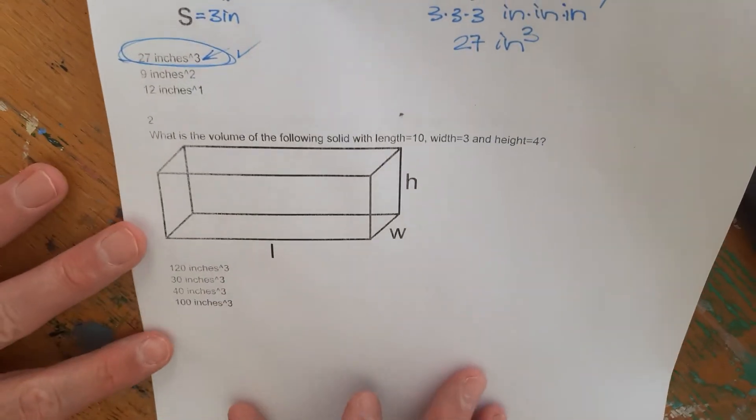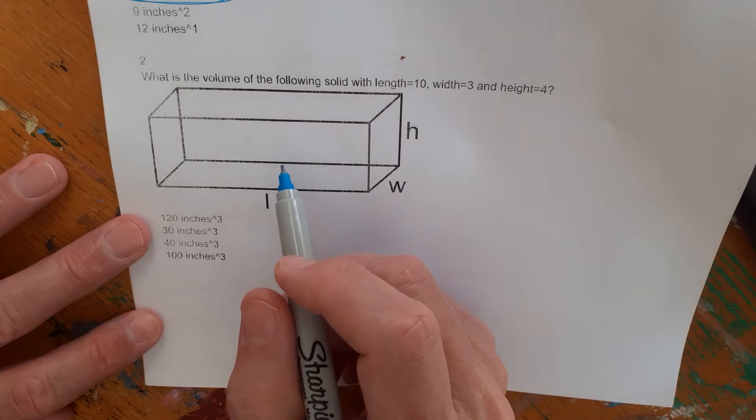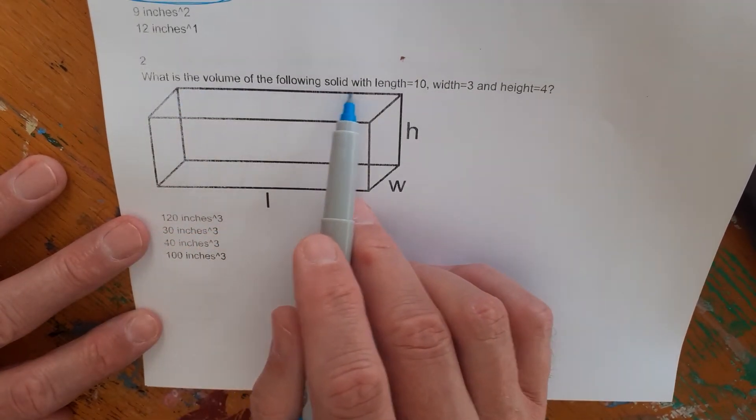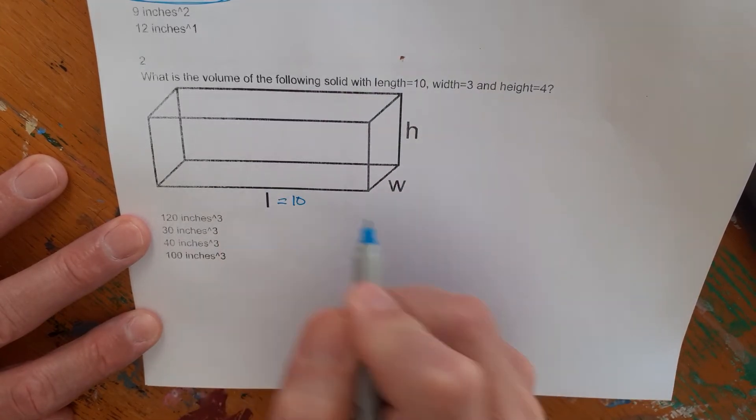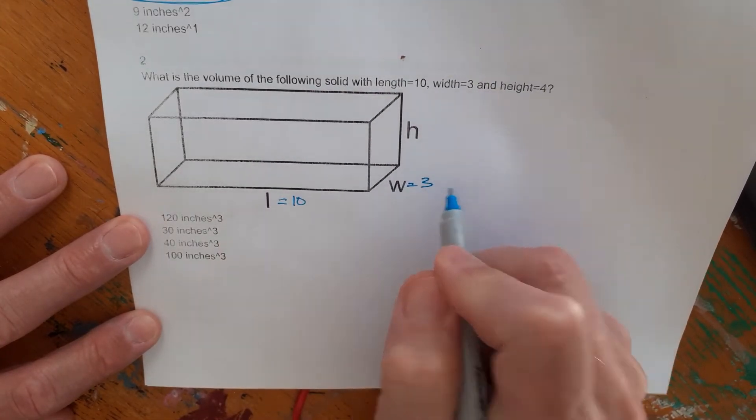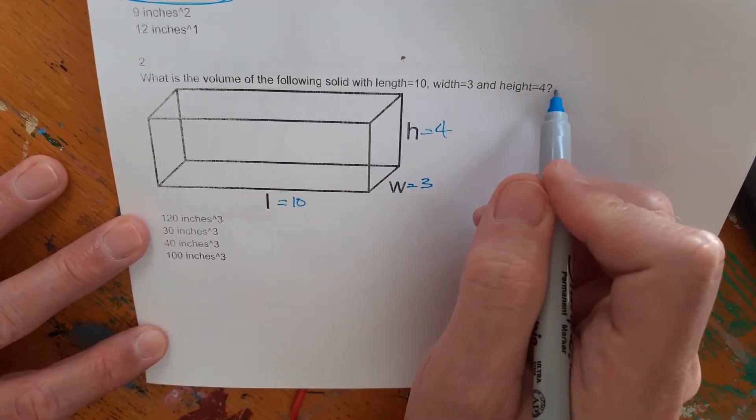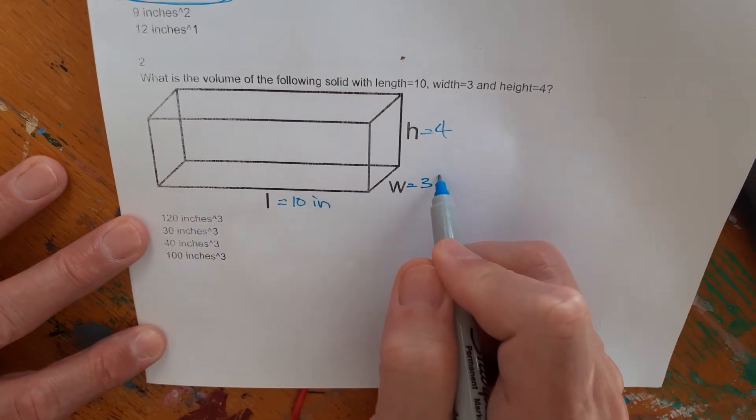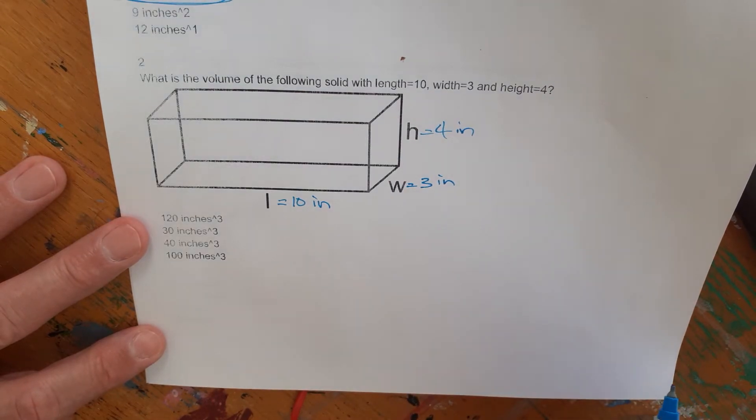Let's move down and look at what we got here is a rectangular prism. What is the volume of the following solid? Length 10, width 3, and height 4. And they don't say inches, but look, the answers are all in inches. So these would all be inches. And we can deduce that from the problem. Probably could be written a little bit more clearly, but it doesn't matter, we get the idea.